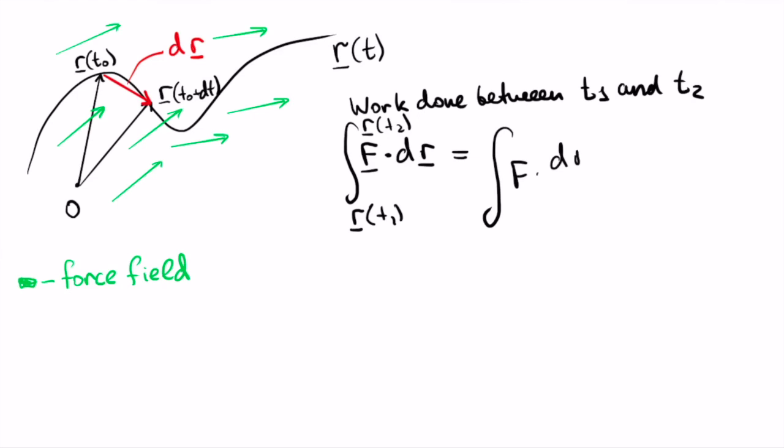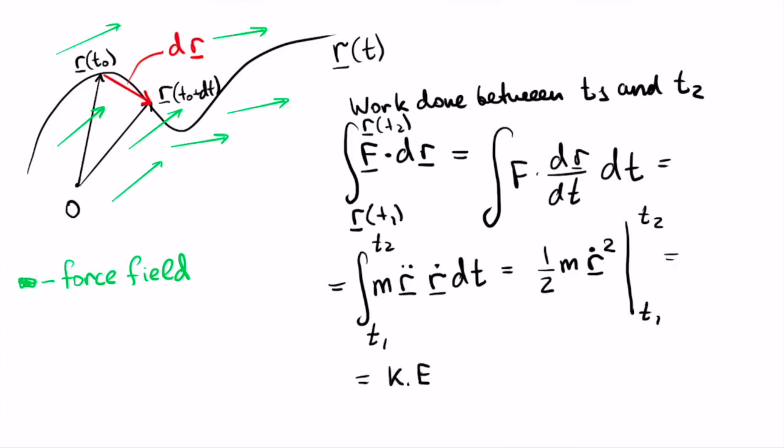We can rewrite dr to introduce dt and then use Newton's second law to write our force as mr double dot. And as you can see, integrating this quantity gives us half mr dot squared, which is exactly the expression for kinetic energy.